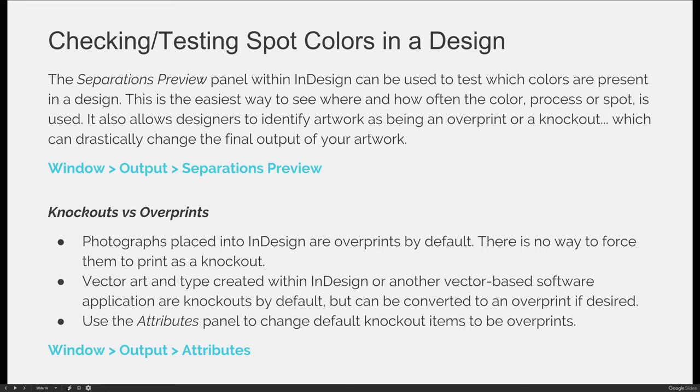If you wanted vector art or type to print as an overprint like a photograph does, you would have to convert it. You'll use the attributes panel within InDesign to change any knockout artwork to be an overprint. You cannot convert a photograph to be a knockout — if something is already an overprint, you can't use the attributes panel to change it to a knockout; you can only change a knockout to be an overprint. To access the attributes panel, go to the Window menu, Output, and choose Attributes.